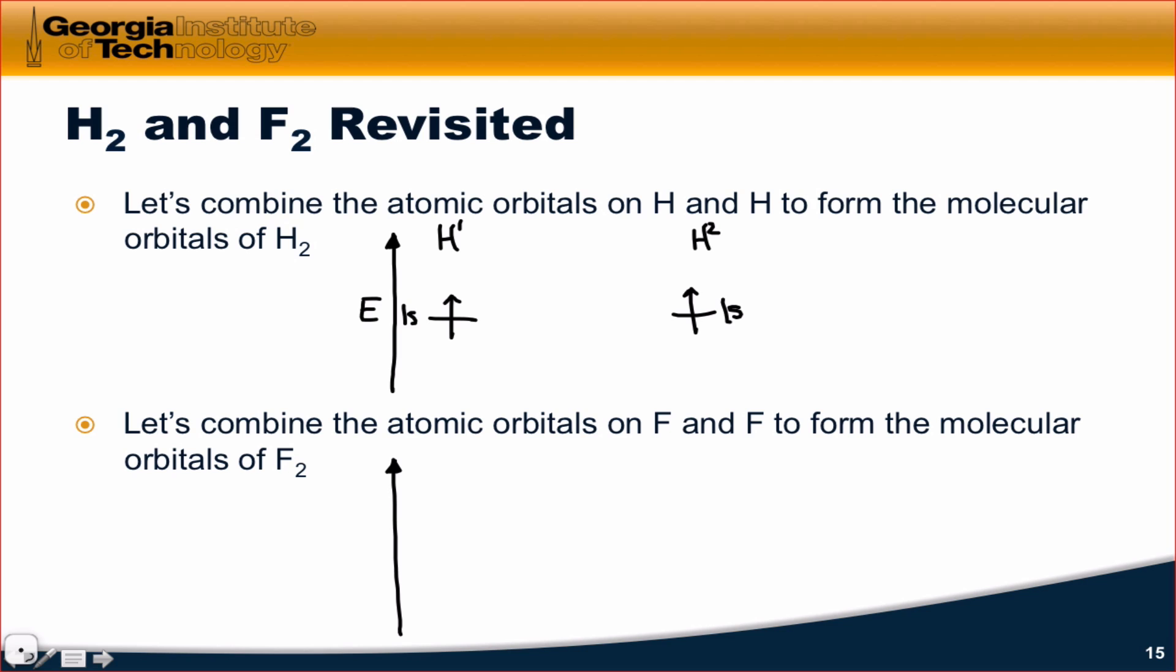For fluorine, the picture is slightly more complicated, but let's focus on the valence orbitals only. So the valence shell of fluorine is n equals 2. It's a second row element, and we have a 2s orbital and the three 2p orbitals. Fluorine has seven valence electrons, and so we can fill these up according to Hund's rule and the Aufbau principle, like so. And I'm just going to reproduce this diagram on the other side for the other fluorine atom.